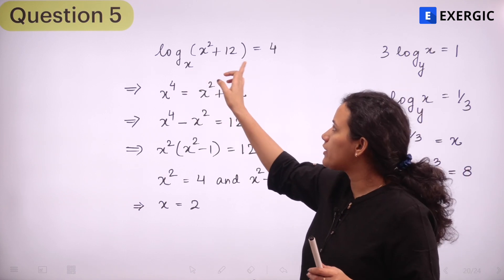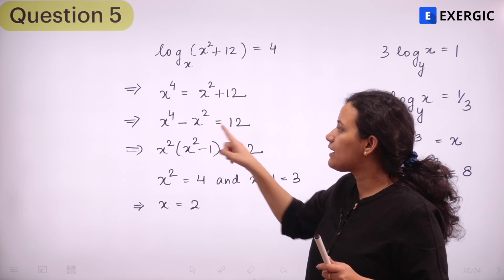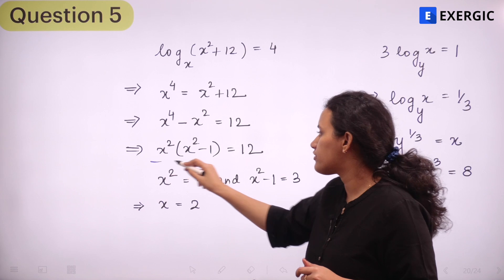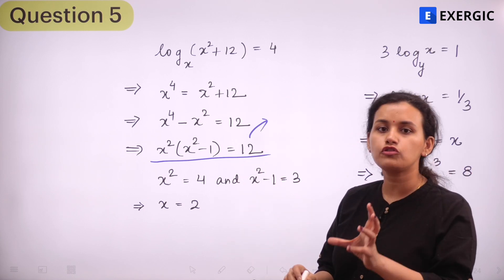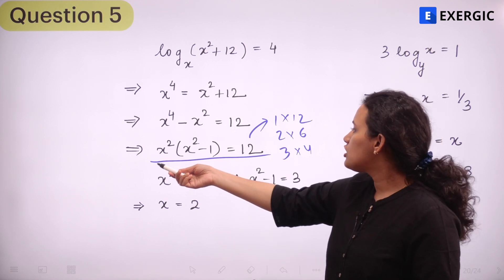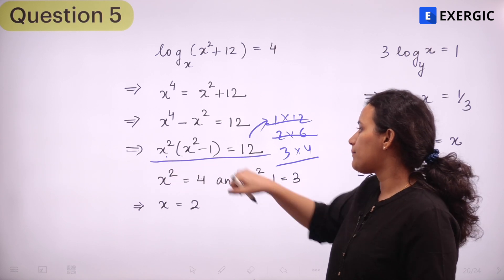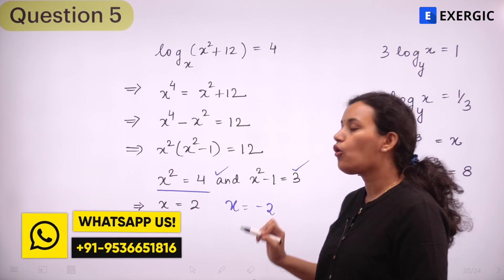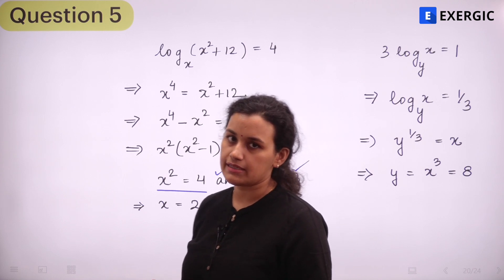The first expression is log base x of (x² + 12) = 4, which means x⁴ = x² + 12, so x⁴ − x² = 12, which factors as x²(x² − 1) = 12. Writing 12 as a product of two numbers: 3 × 4 works, where x² = 4 and x² − 1 = 3. So x² = 4, giving x = ±2. Since x and y must be positive real numbers, x = 2.